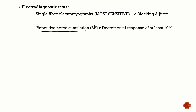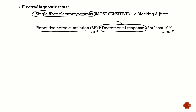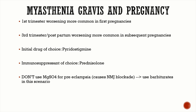Electrodiagnostic tests: repetitive nerve stimulation at low frequency (around 3 Hz) produces a decremental response of at least 10% — very important exam question. The most sensitive investigation in myasthenia gravis is single-fiber electromyography (SFEMG), not RNS. On SFEMG, you look for jitter and blocking.